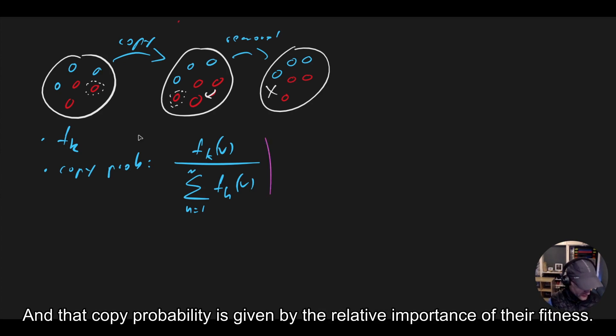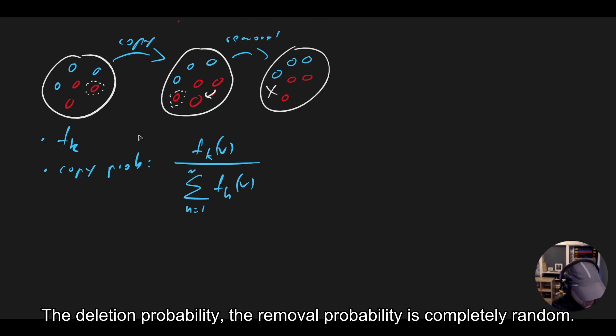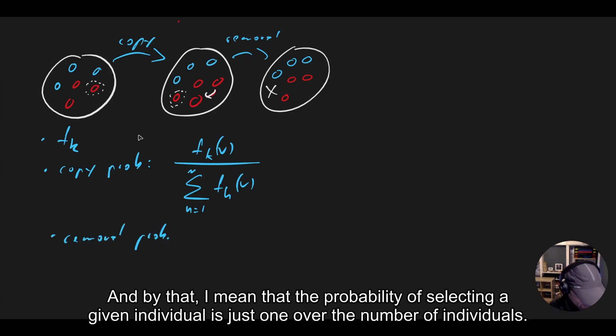And the deletion probability, the removal probability, is completely random. And by that, I mean that the probability of selecting a given individual is just one over the number of individuals.